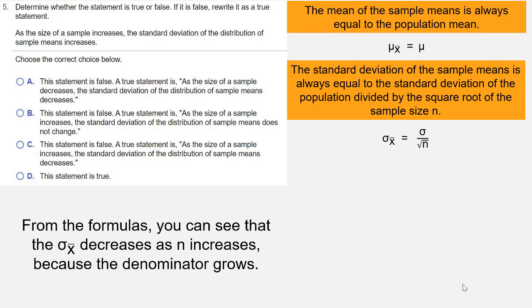σ_x̄ is σ divided by the square root of n, so as that n grows, as the size of the sample grows, the denominator grows. And when the denominator of a fraction grows, the value of the fraction decreases.